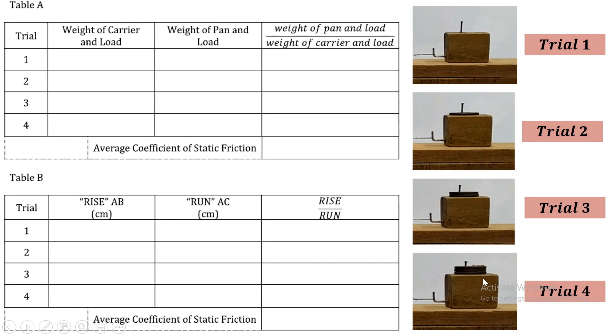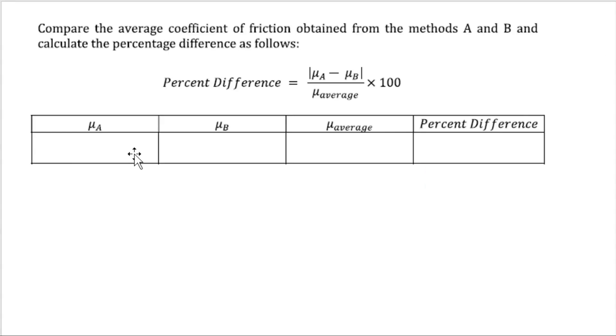We will use the same object for trial 1, 2, 3, and 4 for procedure B. After we do the trials, we will get here our average coefficient of friction from procedure A. And this is the average coefficient of static friction from procedure B. Then we will get the average of the 2, so you will have to add divided by 2.